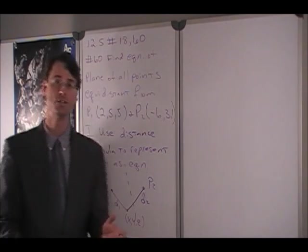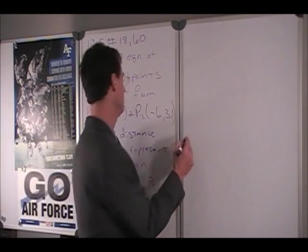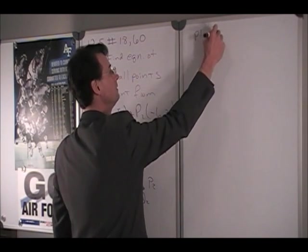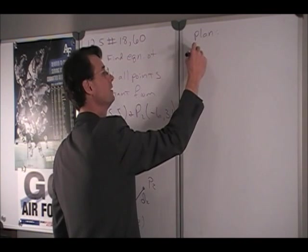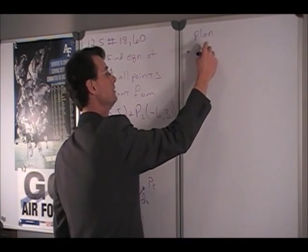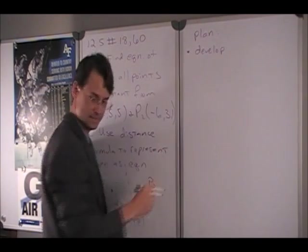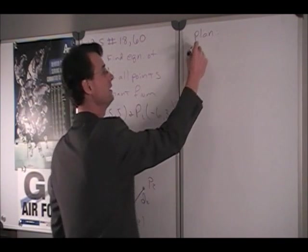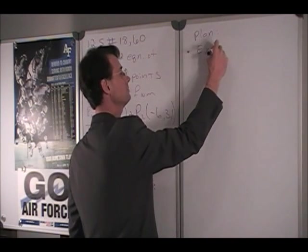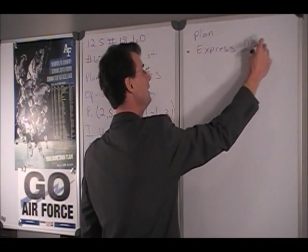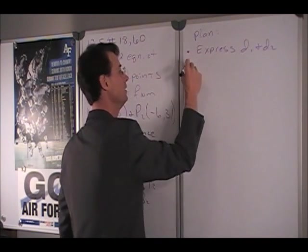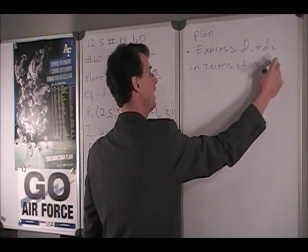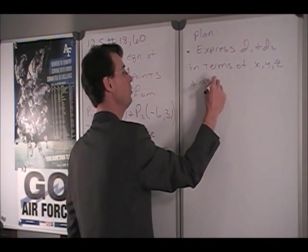So our two distances are D1 and D2. So our plan is to express D1 and D2 in terms of XYZ and the given points.